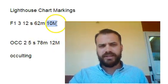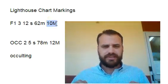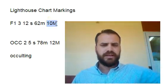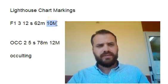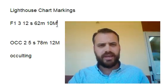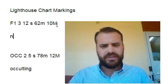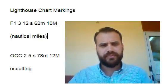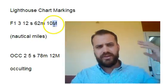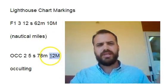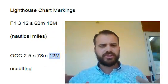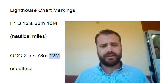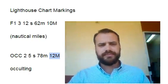And finally, this last bit here is the visibility — that is, how far away from the lighthouse can you be and still see it. This one is 10M, and the M stands for nautical miles. So that one can be seen from 10 nautical miles away, and this one can be seen from 12 nautical miles away. This also gives you an idea of how close you are to the lighthouse, which is important because you don't want to run into the thing. That's lighthouses.